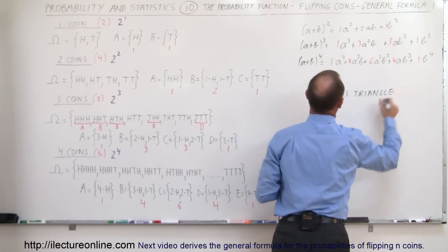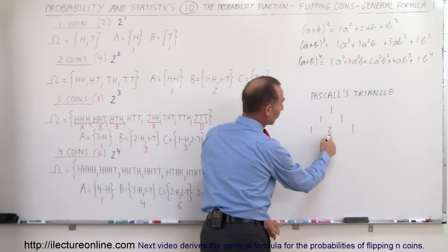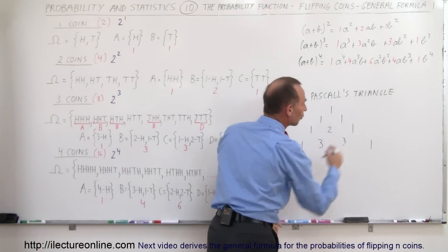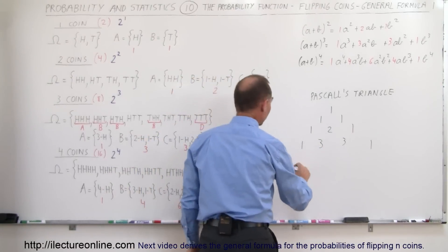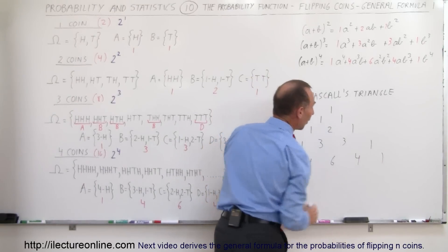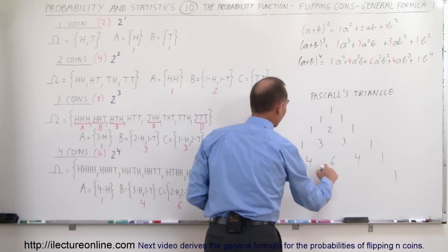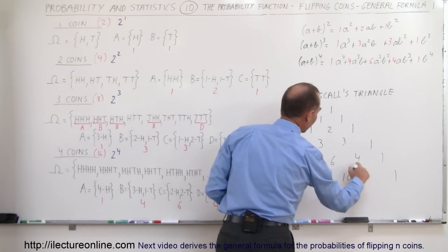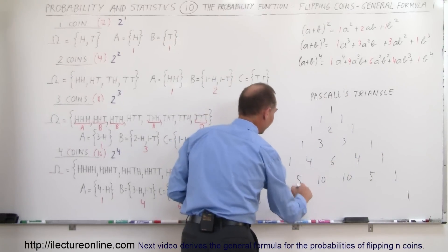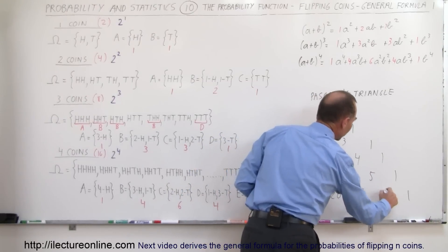Pascal's Triangle looks something like this: 1, then 1 and 1, then 1, 2, 1. The way you develop it is you add the two numbers above together — you always have a 1 on both sides. So 1 plus 2 gives you 3, and 2 plus 1 gives you 3, giving you the row 1, 3, 3, 1. Then 1 plus 3 gives you 4, 3 plus 3 gives you 6, 3 plus 1 gives you 4, producing 1, 4, 6, 4, 1. Continuing: 1 plus 4 is 5, 4 plus 6 is 10, 6 plus 4 is 10, 4 plus 1 is 5.